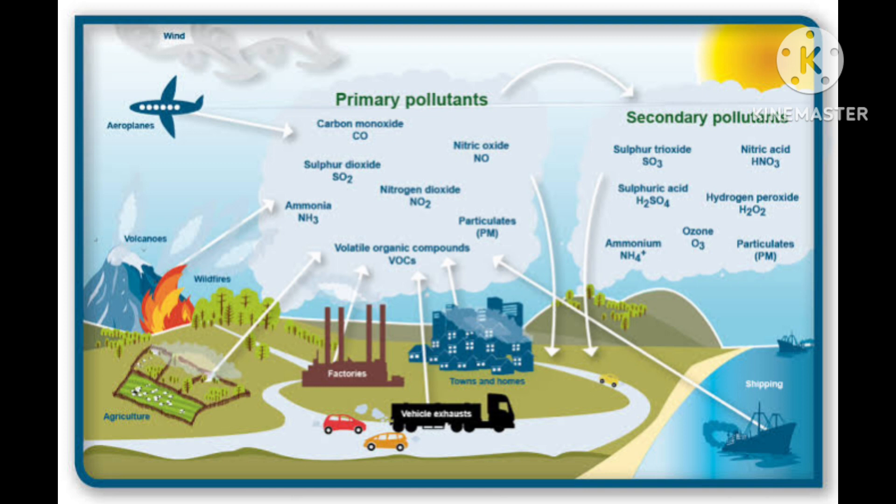Particulate particles in the atmosphere may be viable or non-viable. The viable particles — for example bacteria, fungi, moulds, algae etc. — are minute living organisms dispersed in the atmosphere. Human beings are allergic to some of the fungi found in air.